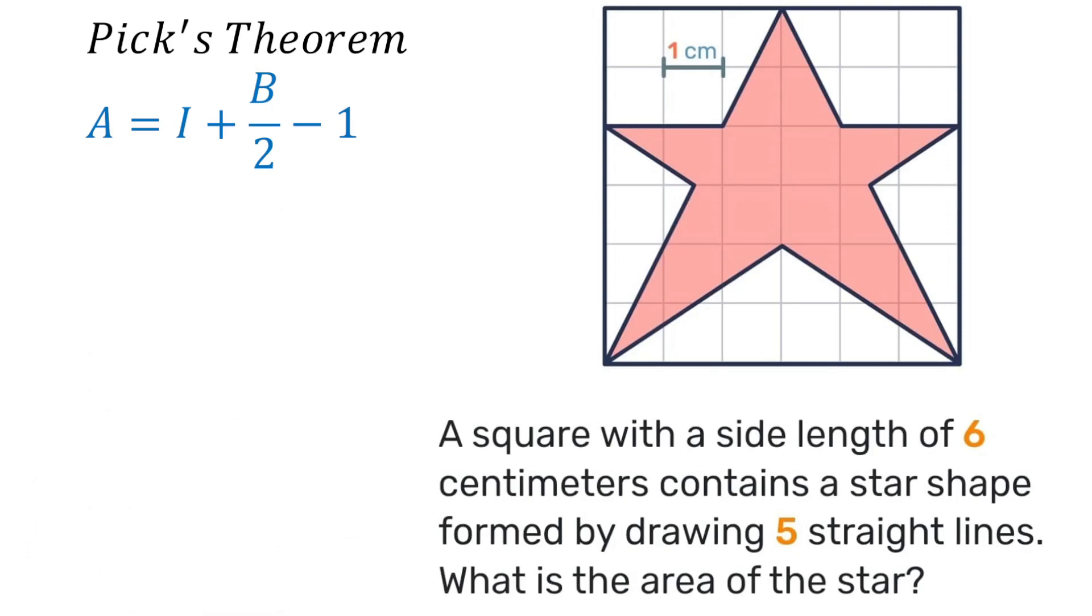So we have to determine the value of I. We do that by counting. Count along with me. 1, 2, 3, 4, 5, 6, 7, 8, 9. So there are 9 internal lattice points.